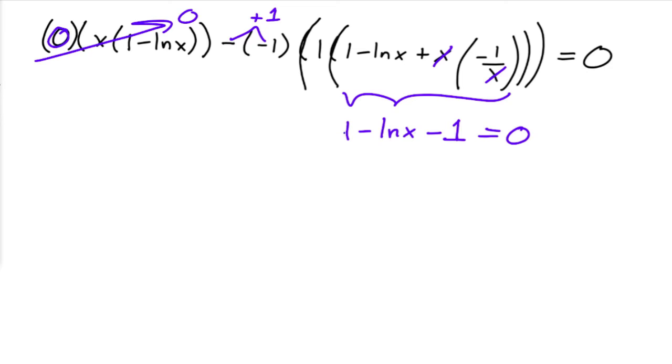So I have positive 1 times all of that, and this is equal to 0. So then 1 minus 1, those guys go away. So then all I have is natural log of x equals to 0, and the solution to that is x is equal to 1.